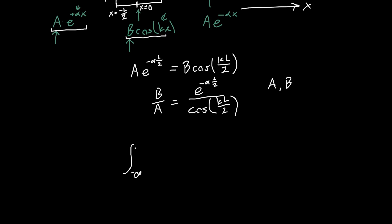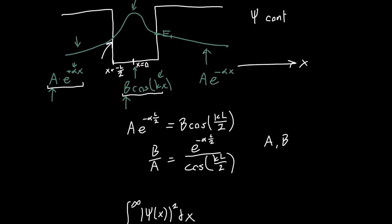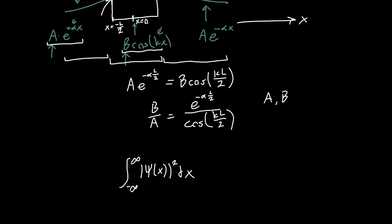take the integral from minus infinity to infinity of the magnitude of the wave function squared. And so this would be a piecewise integral, so first you'd integrate this exponential part, then you'd integrate this cosine part, then you'd integrate this exponential part. And this has to be equal to one for a properly normalized wave function, for the wave function to be interpreted as a probability distribution. And so performing this integral will let you solve for A and B directly, or in addition with this equation will let you solve for A and B.